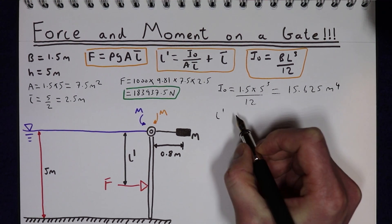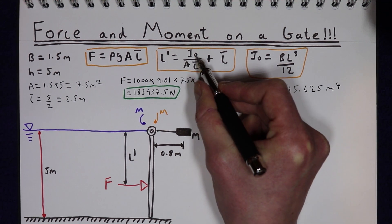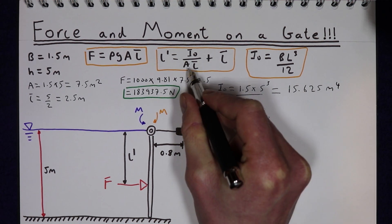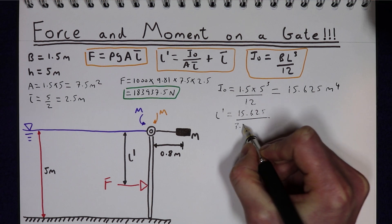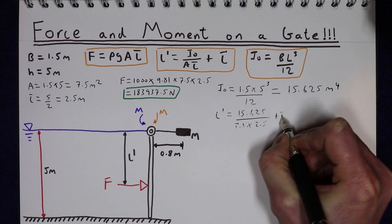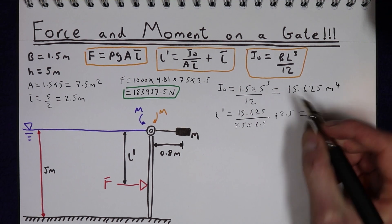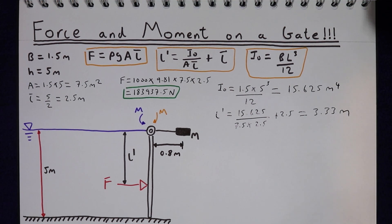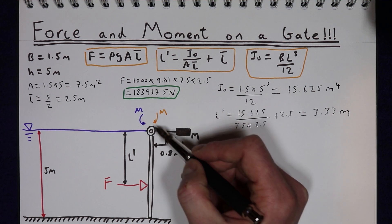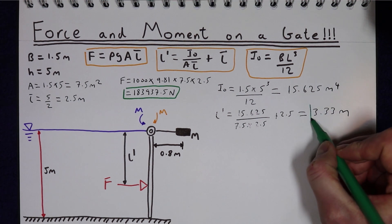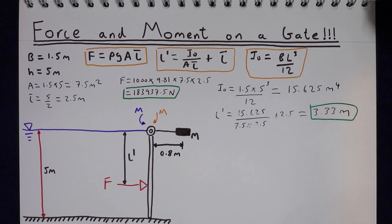I₀ is going to be equal to 1.5 times 5 to the power of 3 divided by 12, and that gives us the second moment of area of 15.625 metres to the power of 4. We can now work out L', which is 15.625 divided by the area of the gate, 7.5, times by the centroid 2.5, and then added to the centroid. That gives us a point of action of the force from the surface of 3.33 metres. So the moment M trying to open the gate is going to be the force F times by this point of action L'.